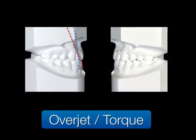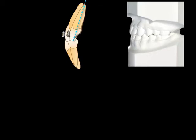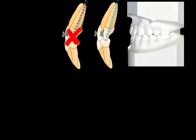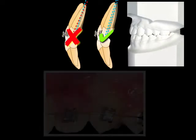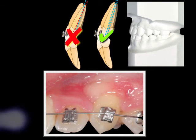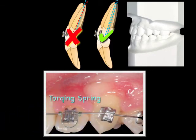Here we could see that every time we try to move a lateral incisor labially, the crown always moves more than the root, resulting in insufficient labial root torque. So if we could treat it again, we could add a torquing spring to enhance the labial root torque expression.